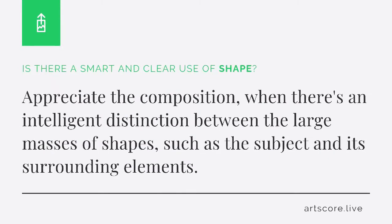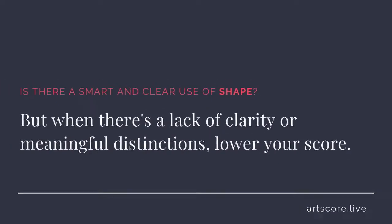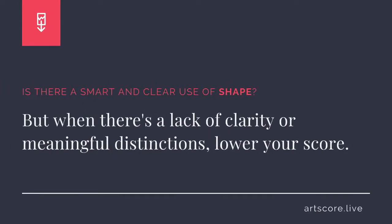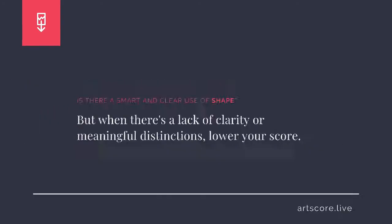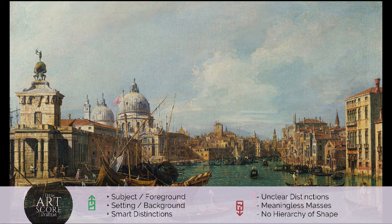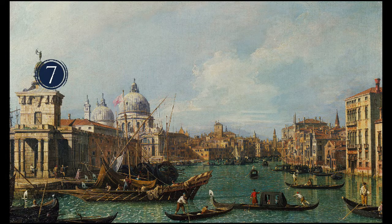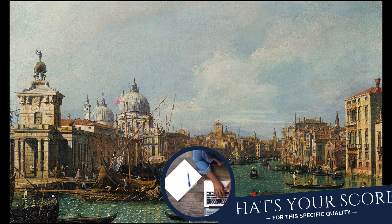Shape. Is there a smart and clear use of shape? Appreciate the composition when there's an intelligent distinction between the large masses of shapes, such as the subject and its surrounding elements. But when there's a lack of clarity or meaningful distinctions, lower your score. I scored the artwork a 7. I see the distinctions between the foreground and background elements. What's your score?